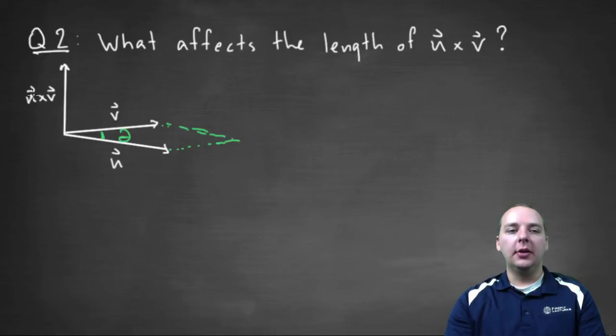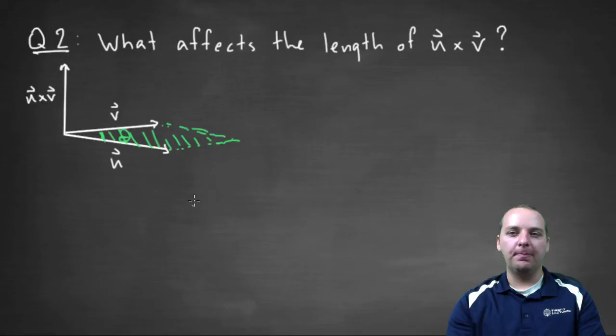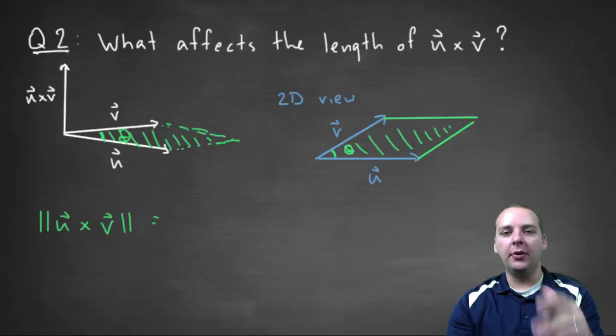Because the length of the cross product, the length of the cross product is the area that's enclosed in this parallelogram right here. Alright, let me make this a little bit more clear by showing you like an aerial view.